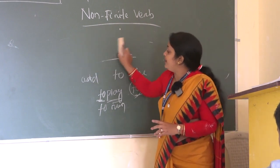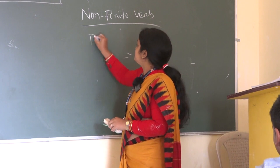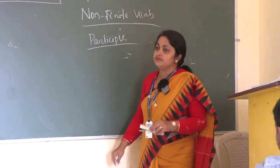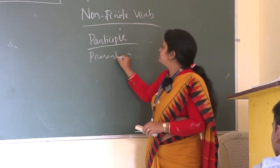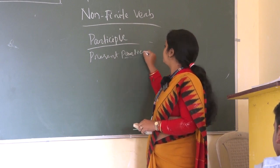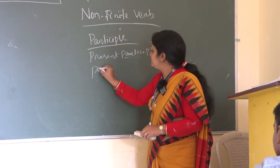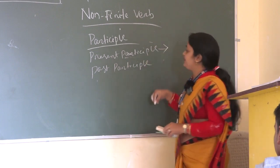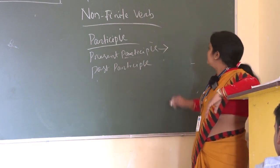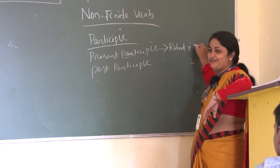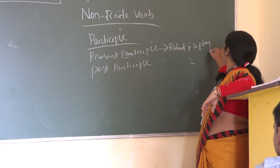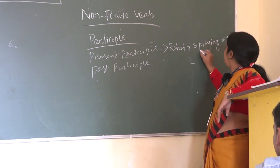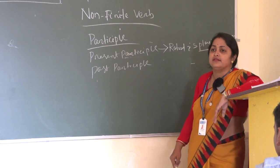Next comes your participle. Participle — there are types: present participle and past participle. For example: 'He is playing a game.' Here, playing is the present participle.